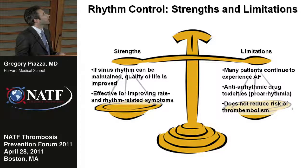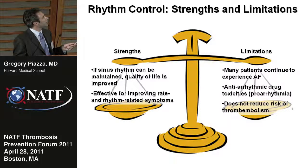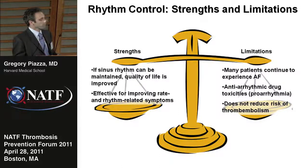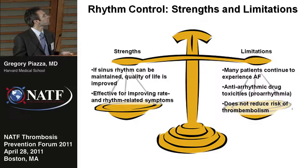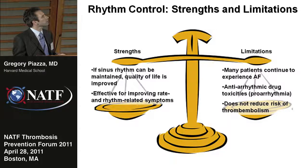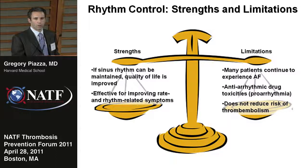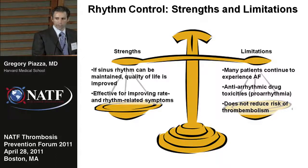On the other hand, rhythm control has its own strengths and weaknesses. If sinus rhythm can be maintained, quality of life is expected to improve, and rhythm control is effective for improving rate- and rhythm-related symptoms. However, many patients continue to experience breakthrough episodes of atrial fibrillation. Antiarrhythmic drugs are associated with toxicities, most importantly proarrhythmic toxicities. And like rate control, rhythm control does not reduce the risk of thromboembolism by itself.